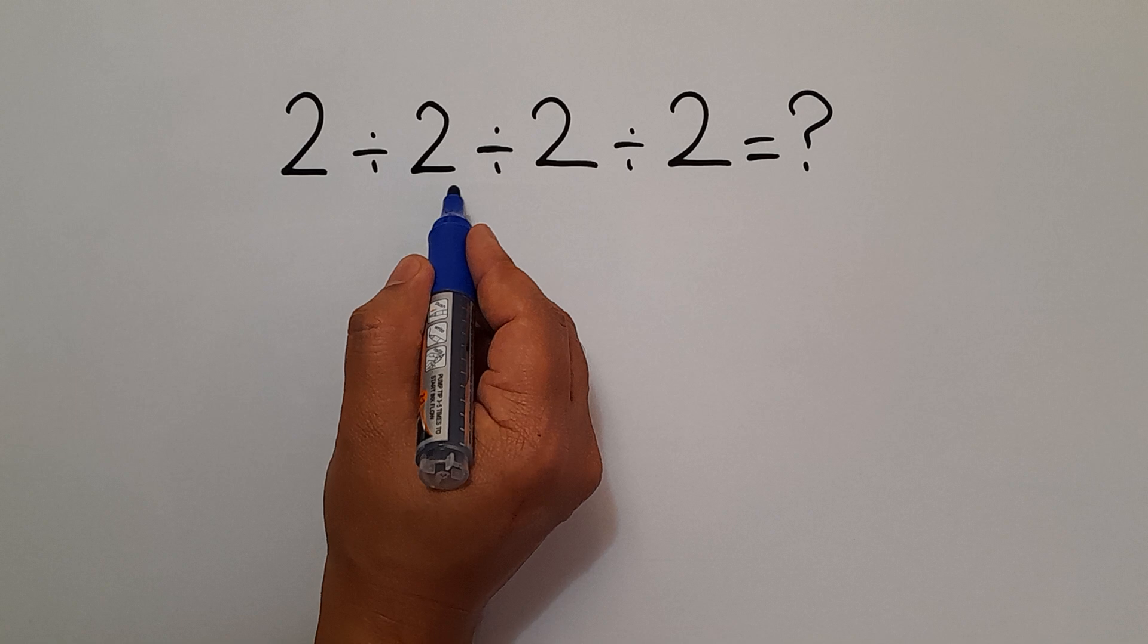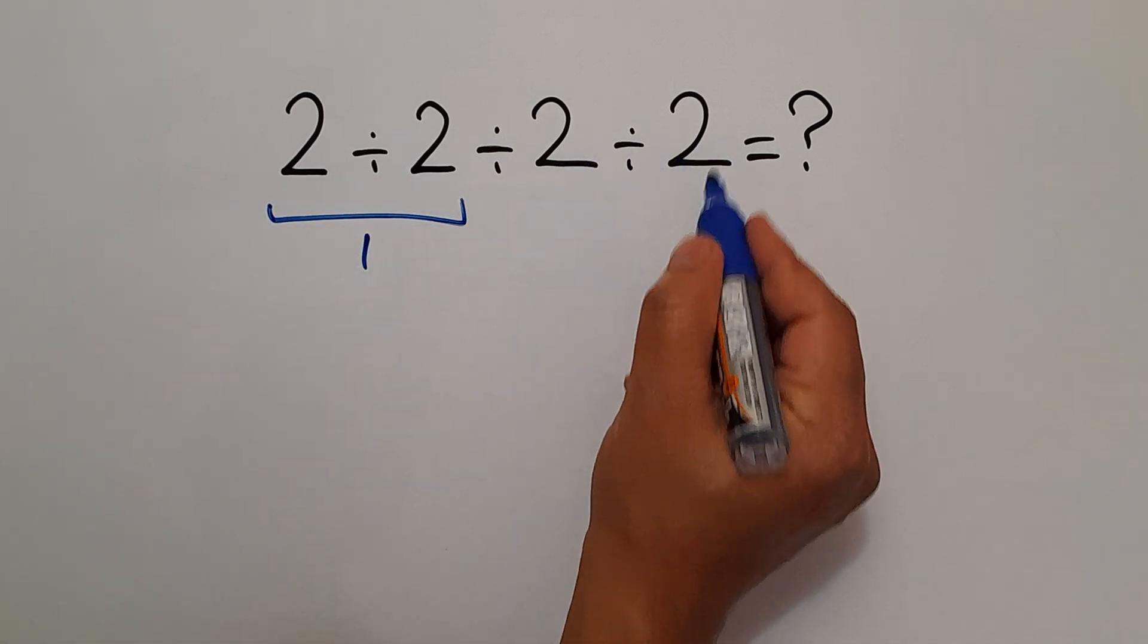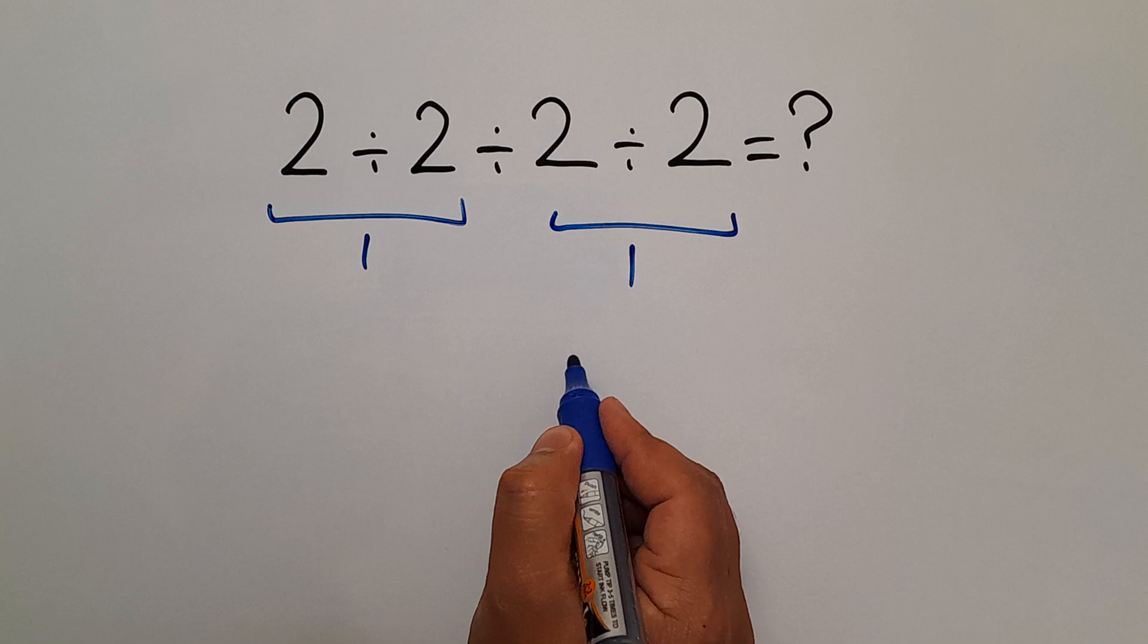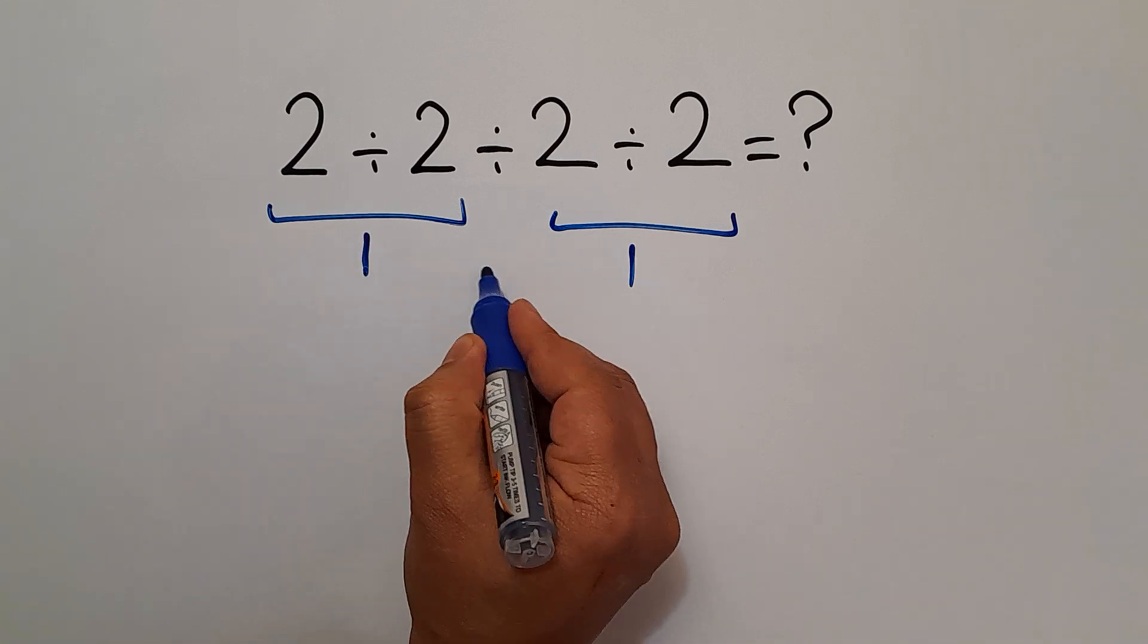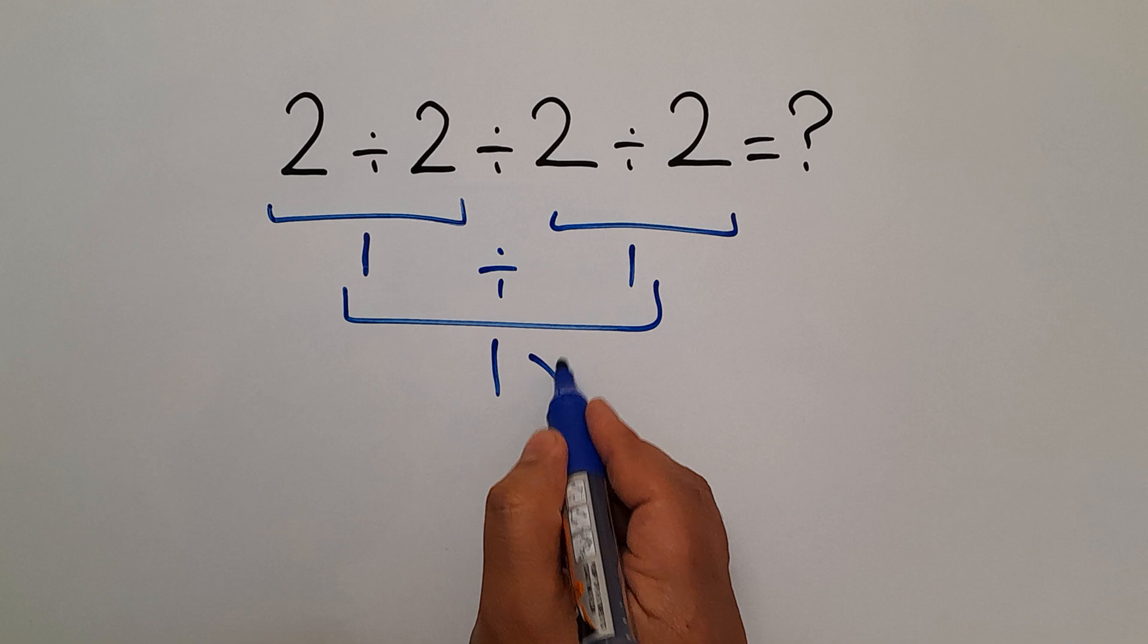2 divided by 2 equals 1, and again we have here 2 divided by 2 which equals 1. So 1 divided by 1 gives us 1, but this answer is not correct.